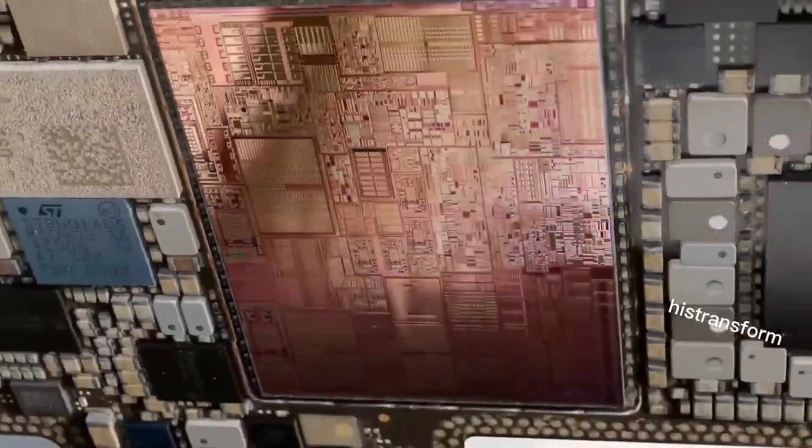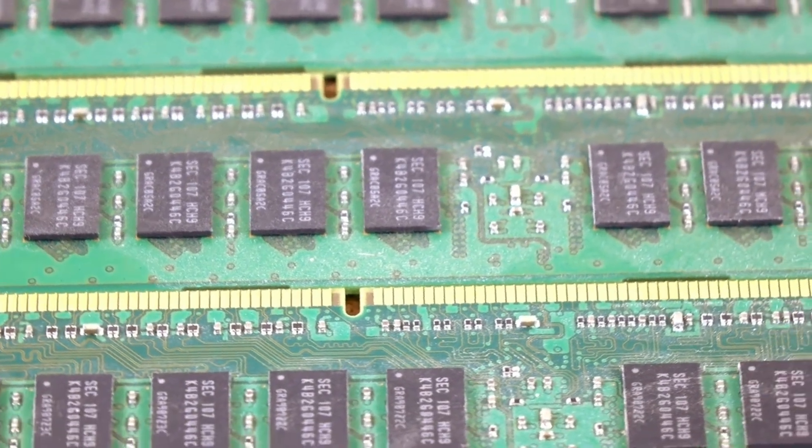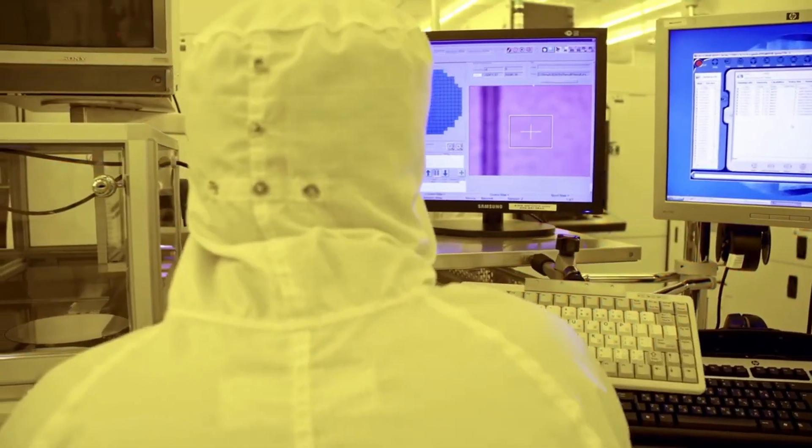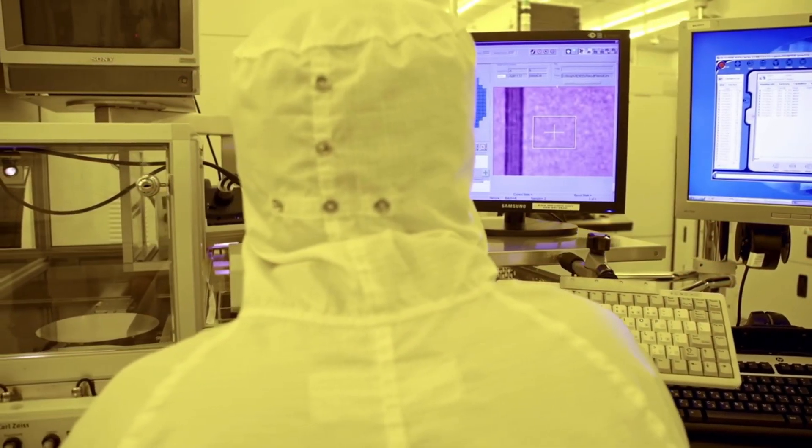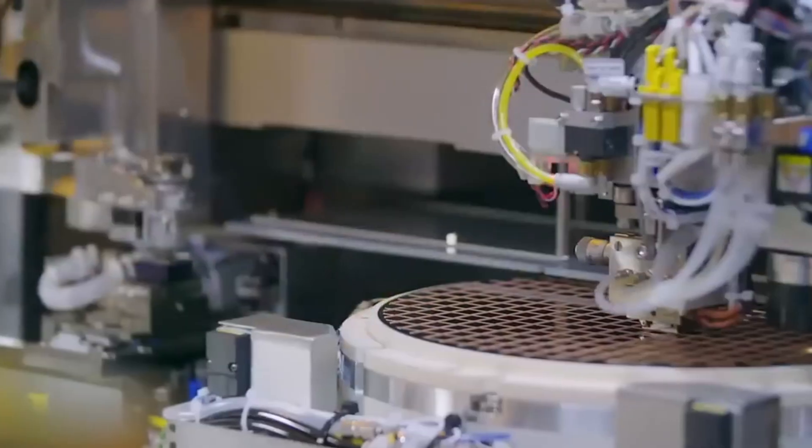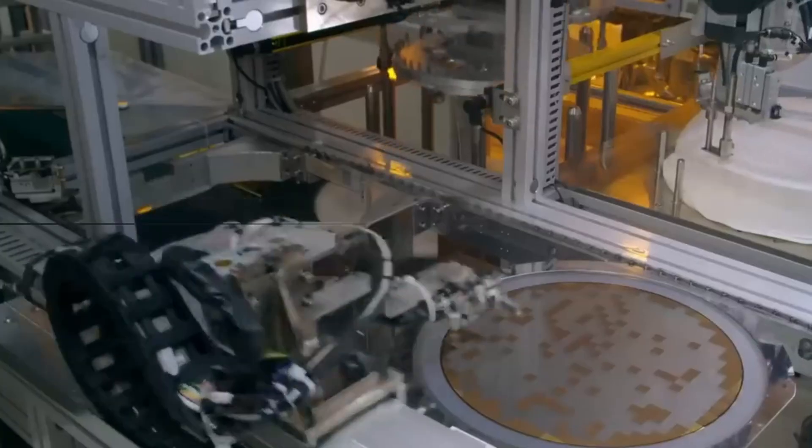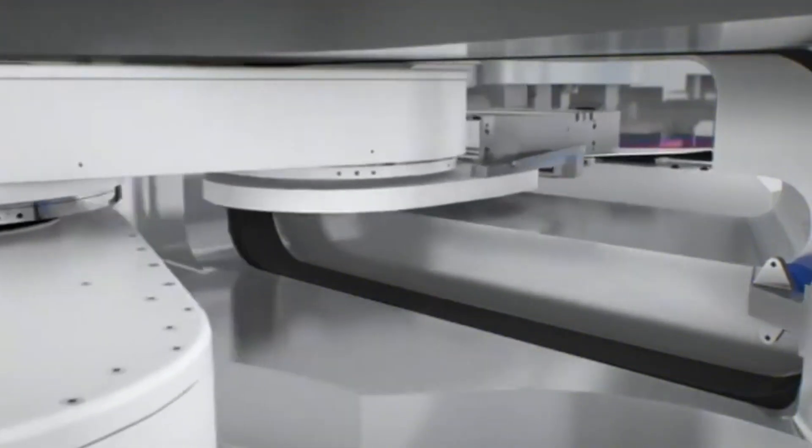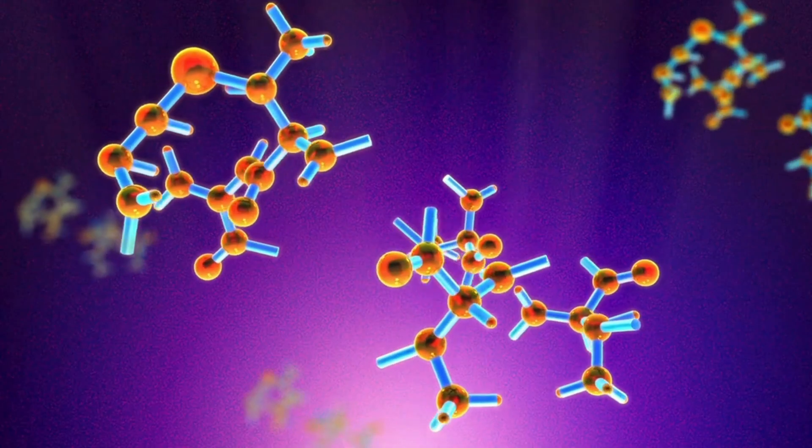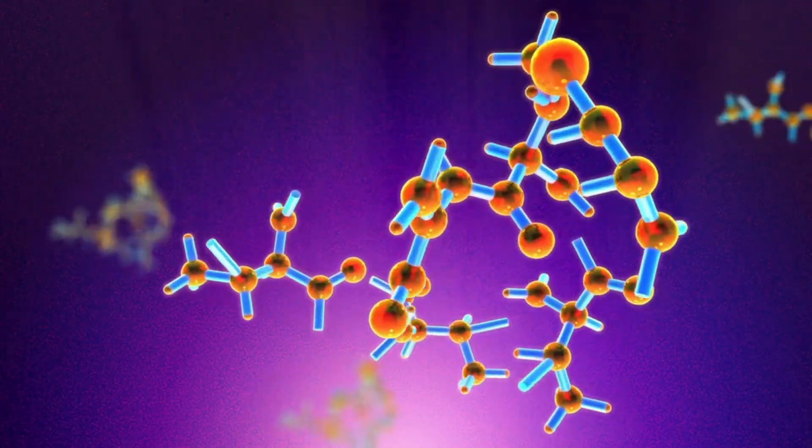Now, all of these improvements are helping us shrink transistors to truly mind-boggling sizes. According to IMEC, one of the world's most advanced chip research labs, we're on track to build chips with features just 0.2 nanometers wide by 2037. To put that in perspective, that's only a few atoms thick. But to go that small, we can't just keep spreading things out flat.